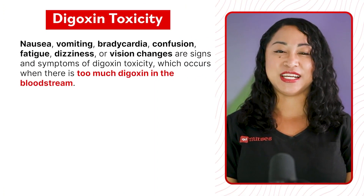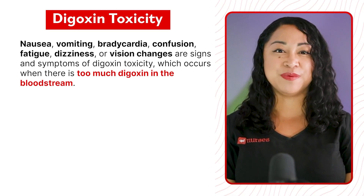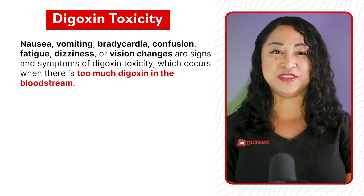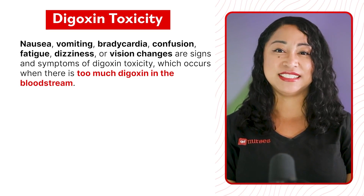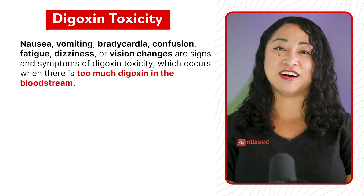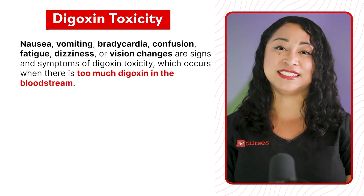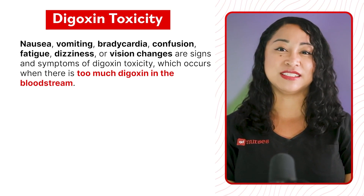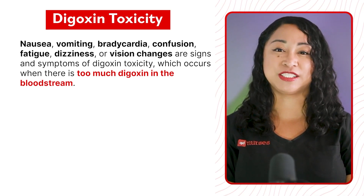Digoxin toxicity: Nausea, vomiting, bradycardia, confusion, fatigue, dizziness, or vision changes are signs and symptoms of digoxin toxicity, which occurs when there is too much digoxin in the bloodstream.